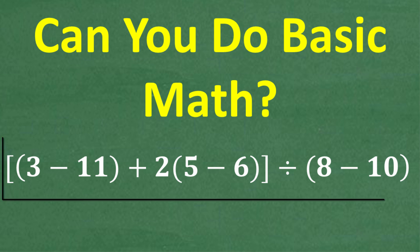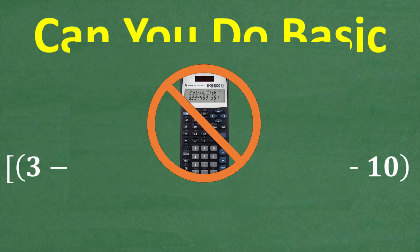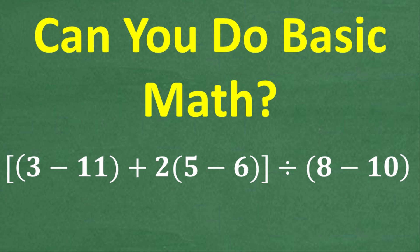We have a bracket right here, then parentheses 3 minus 11 plus 2 times parentheses 5 minus 6 and bracket divided by parentheses 8 minus 10 and parentheses. Of course, we want to simplify this numeric expression. We're not going to use a calculator because we want to test your basic math skills. So this is the question. If you have the answer, go ahead and put that into the comments section. Then we'll walk through exactly how to do this problem step by step.